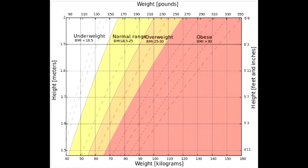BMI is weight in kilograms divided by height in meters squared. BMI categories: underweight <18.5, normal 18.5-24.9, overweight 25-29.9, obese >30, severely obese >35, morbidly obese >40, super obese >45.